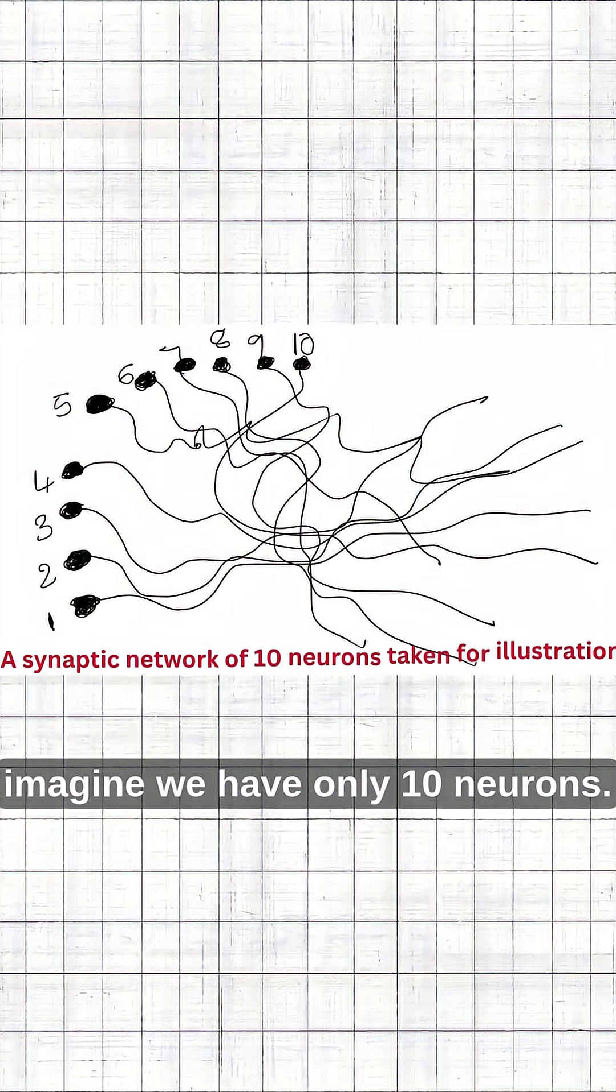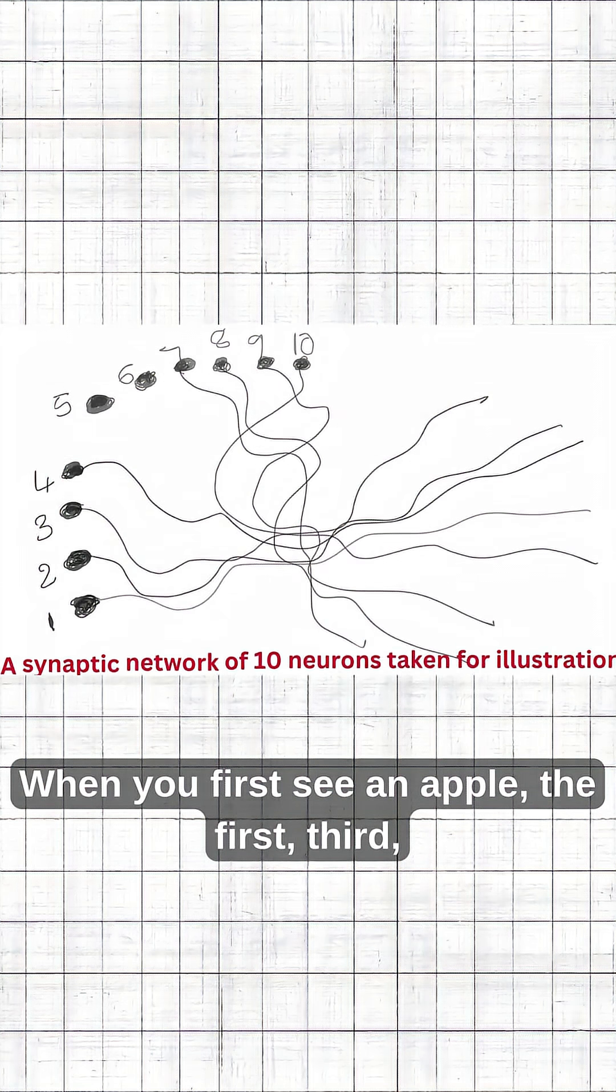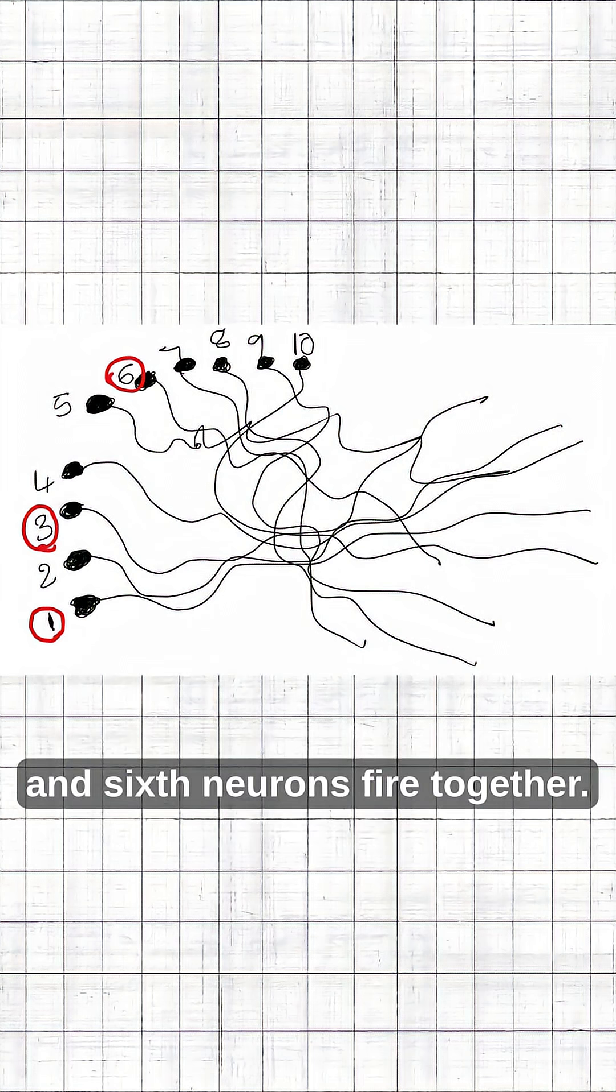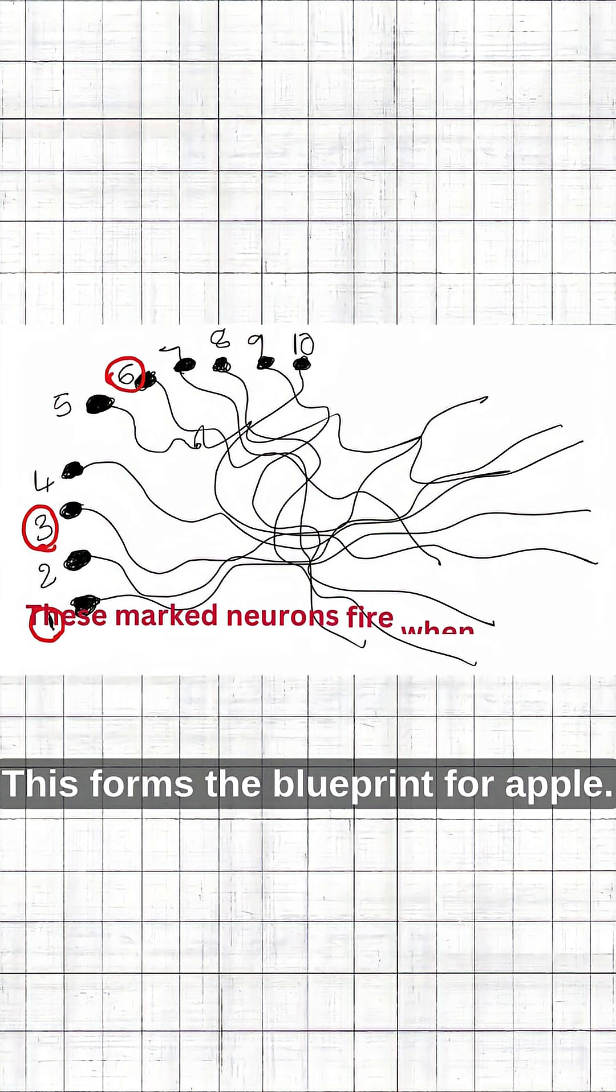For easier understanding, imagine we have only 10 neurons. When you first see an apple, the first, third, and sixth neurons fire together. This forms the blueprint for apple.